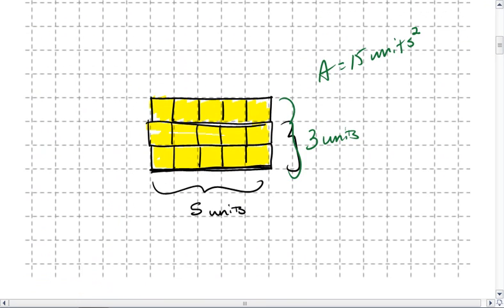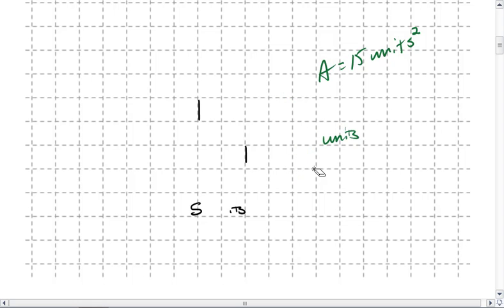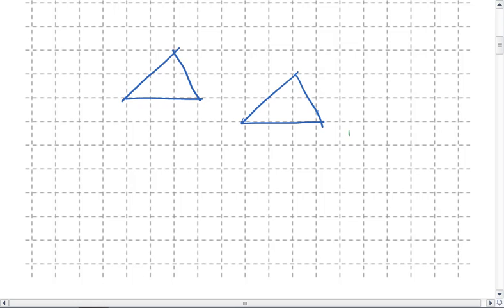For example, if I had two congruent triangles, then by definition, since they are the same size and the same shape, they must have the same area.